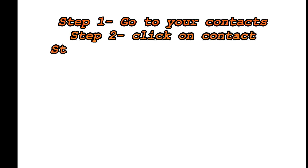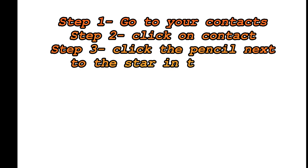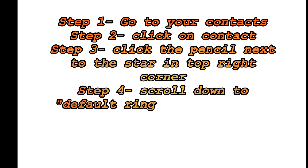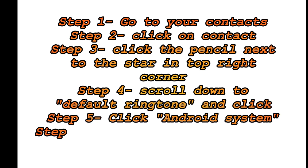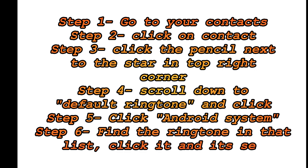You go to your contacts, go to the person, and click on them. In the top right-hand corner of that person's profile there's going to be a star and a pin. You click that pin — that means you're going to edit the profile of that person. Once you click on that, you go all the way down to where it says ringtone. Right below that you click where it says default ringtone, then you click Android system — don't click anything else.